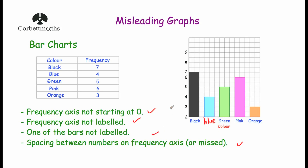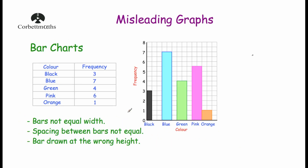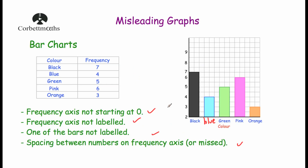So there are some of the common mistakes with bar charts: bars are not equal widths; spacing between bars is not equal; bars may be drawn at the wrong height; the vertical axis may not start at zero or the spacing between the numbers may be wrong; one of the axes or bars isn't labeled. Those are some of the common problems of how bar charts can be misleading.